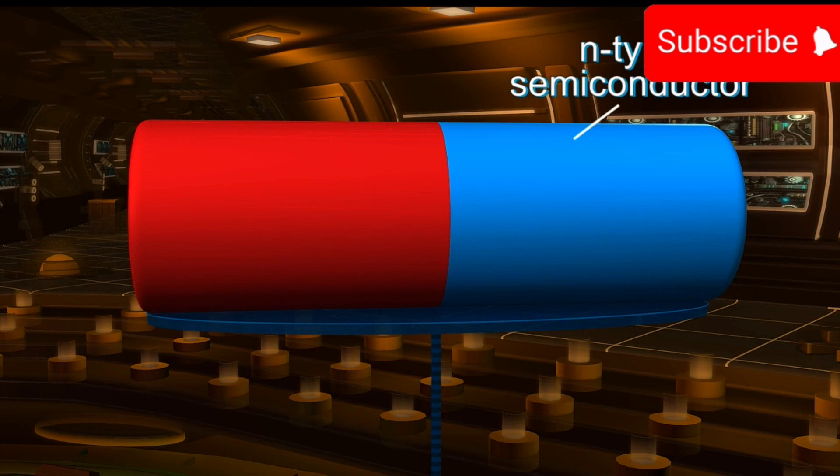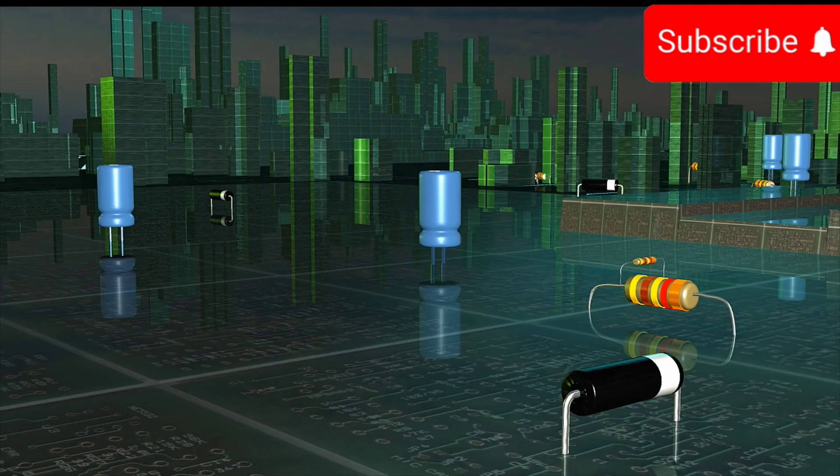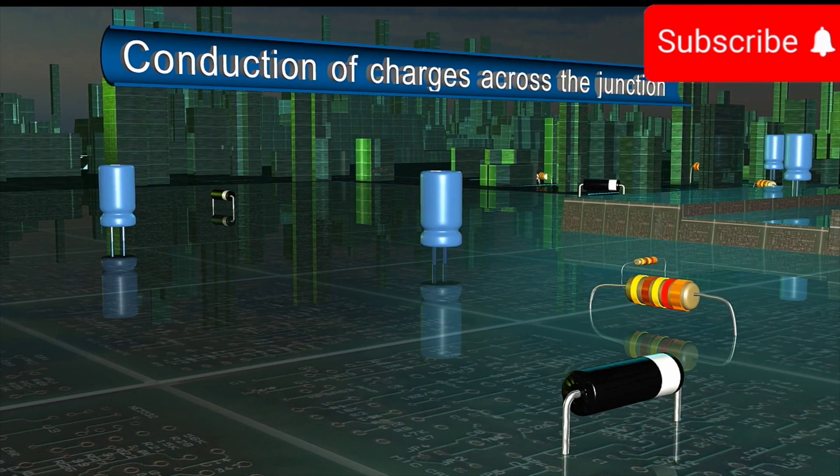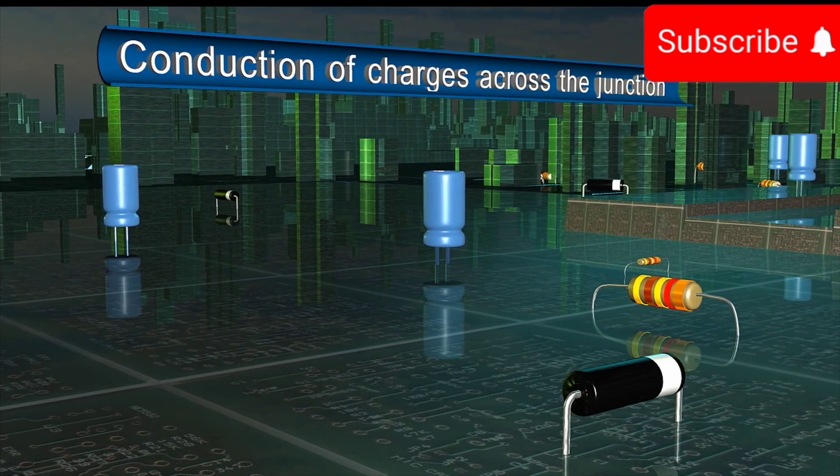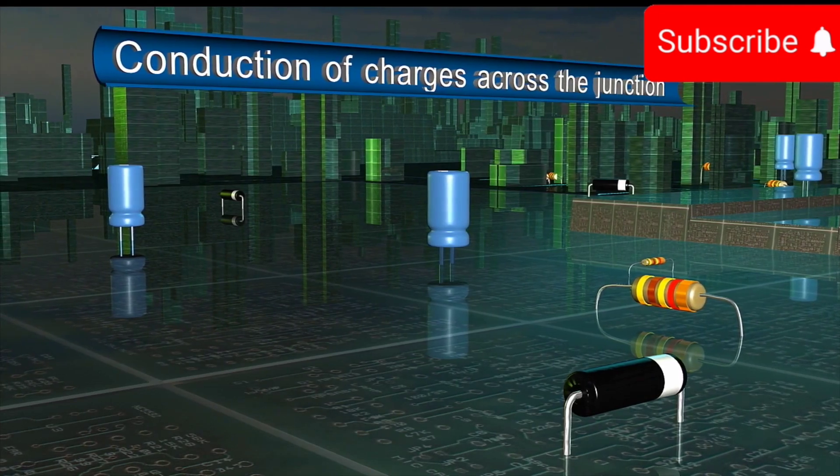The contact surface of the two is called the junction. The conduction of charges across the junction occurs due to two different co-existing mechanisms.